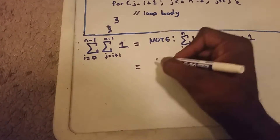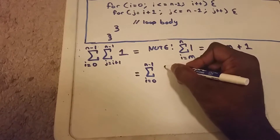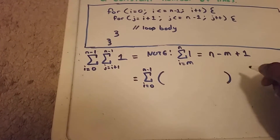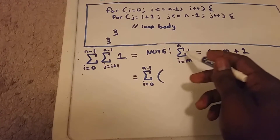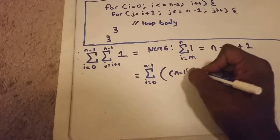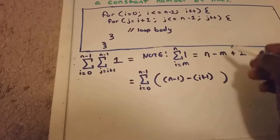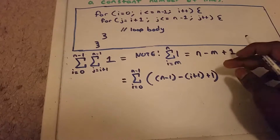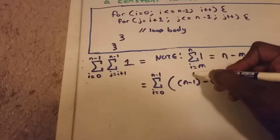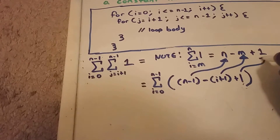Now we're going to start writing our equation. First, rewrite the outer loop summation from i equals zero to n minus one. Inside that is where our inner summation will be. Applying the formula, our n is equal to n minus one, and our m is i plus one. So we get n minus one, minus i plus one, plus one.